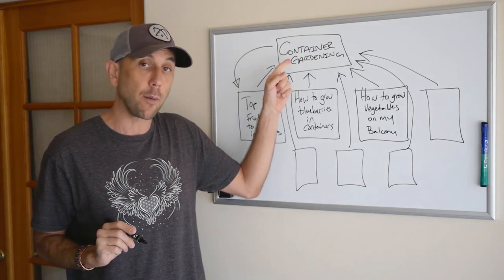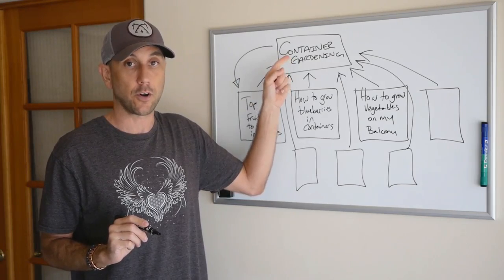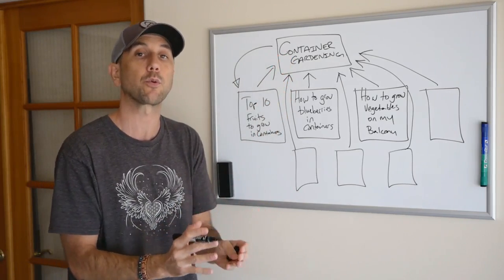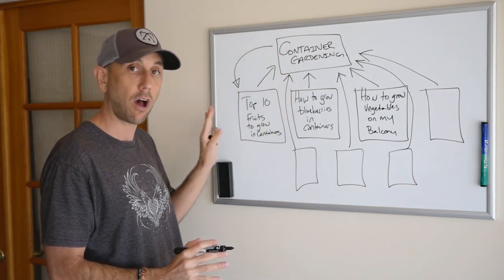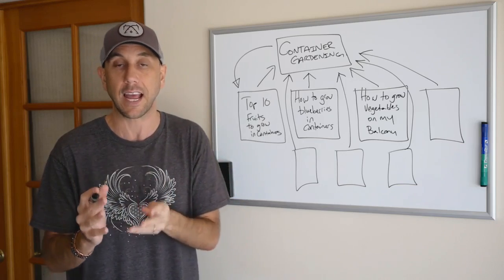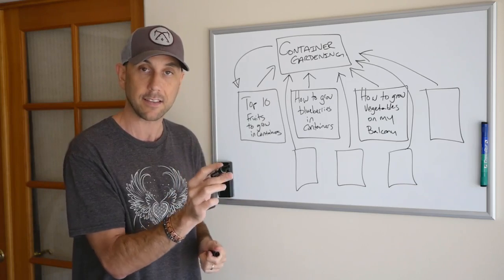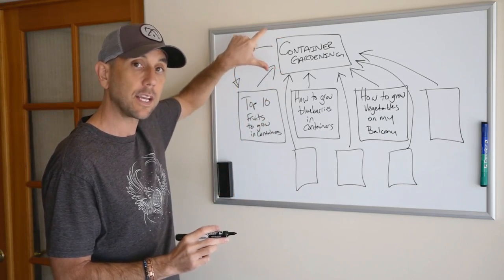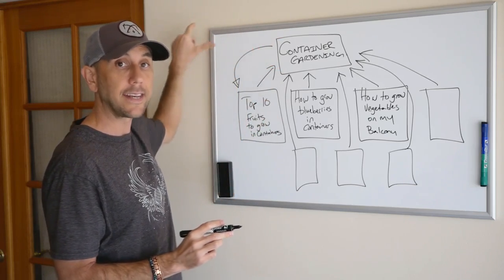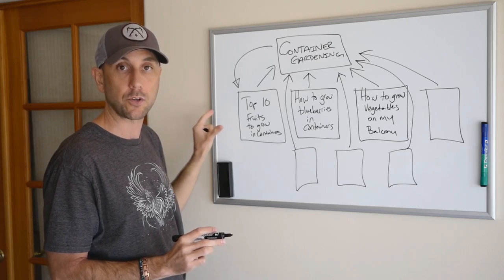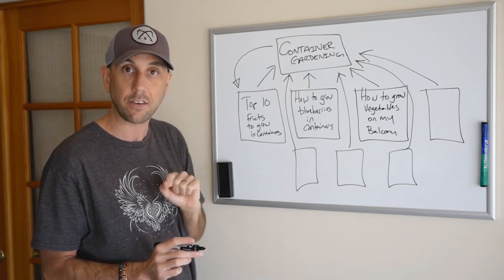So what you would do is you would have one phrase within your core piece of content link out to one of your sub posts in your silo structure. So you might have a point inside of your container gardening post, the key core post, where you talk about the 10 top items you can grow in containers. You reference that post and you link it with an index link.